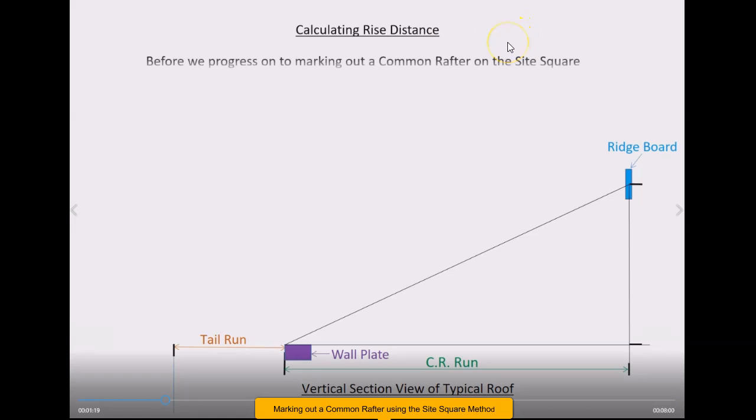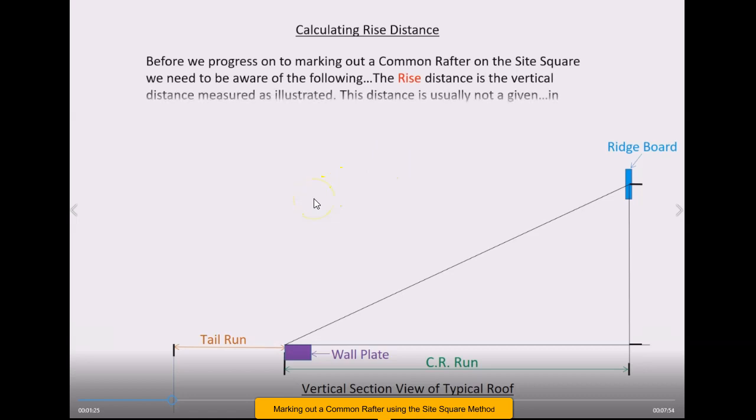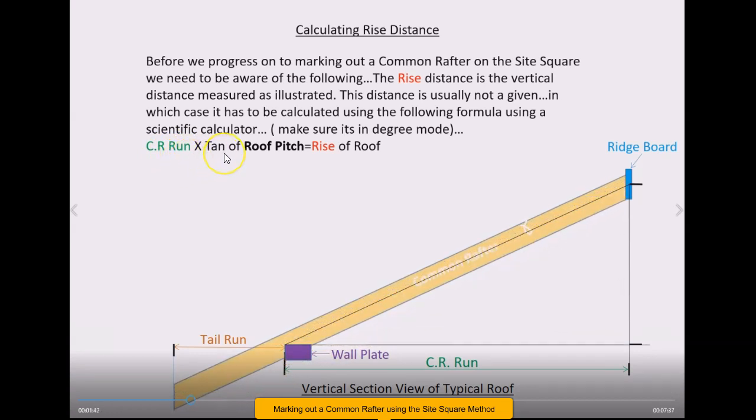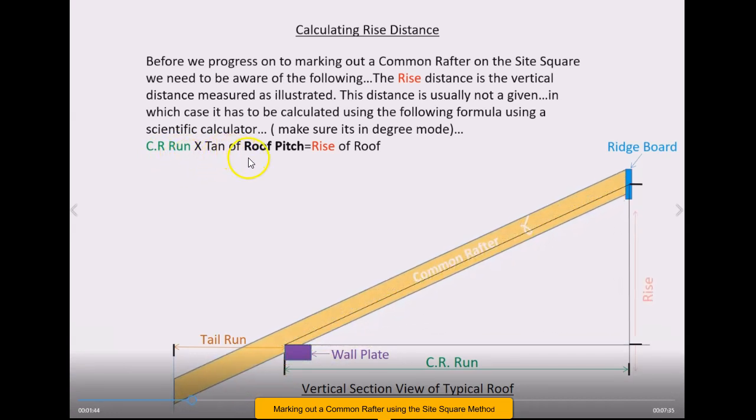Calculating the rise distance: often you're getting the plans of a roof and it's the pitch of the roof you're given. Countries might be different, like the United States, but in Ireland it's the pitch. You need to be able to calculate the rise from that, so you'll really need to use this formula here. Make sure you're on a scientific calculator in degree mode. Basically you just tap in half the span of the roof, hit the multiplication sign, hit the tan button, pop in the pitch of your roof, hit equals, and hey presto, there's your rise distance.